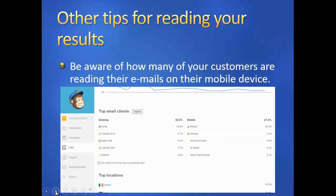Finally, you should make sure not to neglect mobile users. If you check your stats for how many of your customers are reading their emails on a mobile device, you might be surprised if it's something you hadn't really thought about too much before. If it's a large proportion — like here you can see it's almost 50-50 between desktop and mobile — you should make sure that all your campaigns are optimised for mobile and read well on the smaller screen.